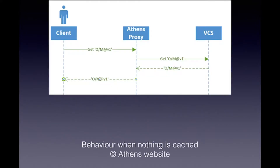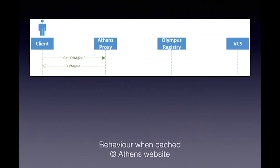You can add extra logic there as well. The way it works: if the module you're asking for is not in the proxy, your go get will talk to the proxy, which will then say it doesn't have this module and will talk to the actual version control system — things like GitHub or GitLab. It gets the module, stores it locally, and returns it to you. When it's cached, you only ever talk to the proxy and don't go out to the version control system.